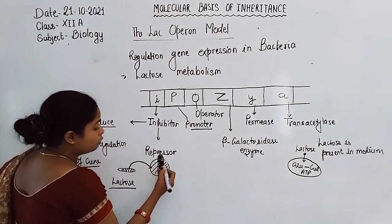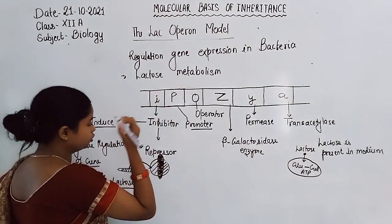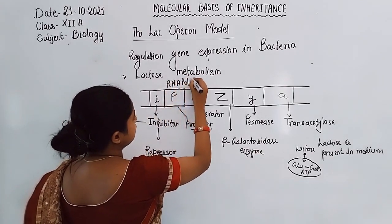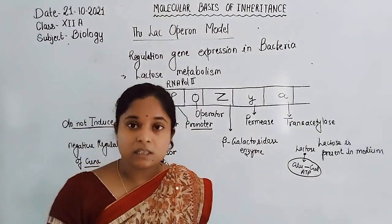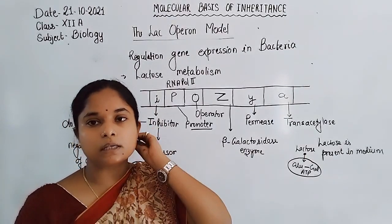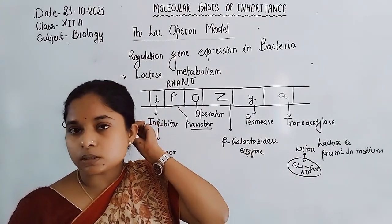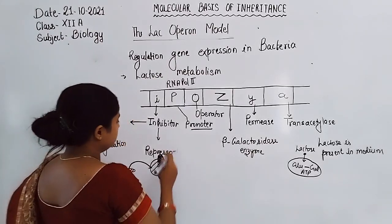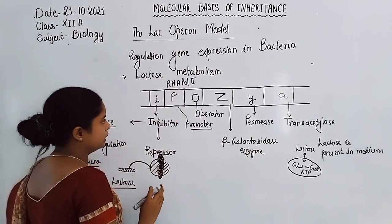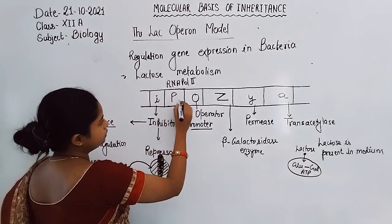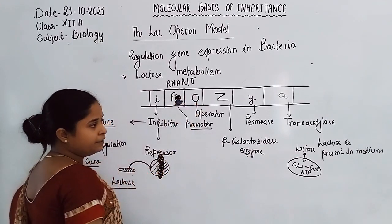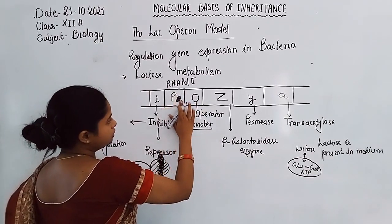When lactose binds with the repressor, the repressor is no longer able to bind with the promoter region. The promoter area is free for RNA polymerase. RNA polymerase — we know that RNA polymerase binds on the promoter only, and they promote the transcription process when they bind with the promoter. Now, the area of the promoter is free for RNA polymerase, which then binds with the promoter region and transcribes the gene.